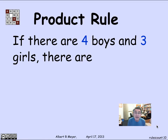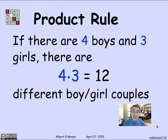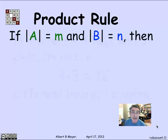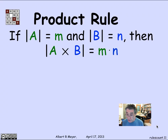The second rule is called the product rule, and it's just about as obvious. Suppose I have four boys and three girls — how many boy-girl couples can I assemble? There are four ways to choose a boy, and for each of them three ways to choose a girl, so there are 4 times 3, or 12, possible boy-girl couples. More generally, if I have a set A of size M and a set B of size N, then A cross B — the set of ordered pairs — has size M times N.